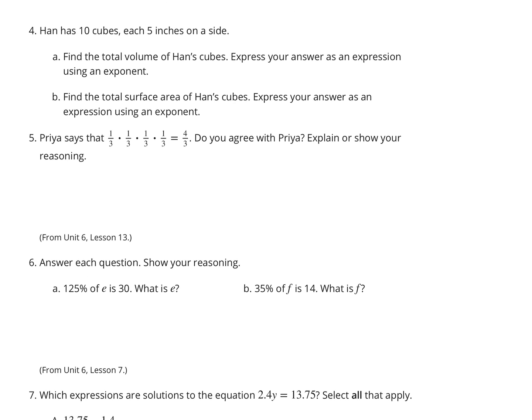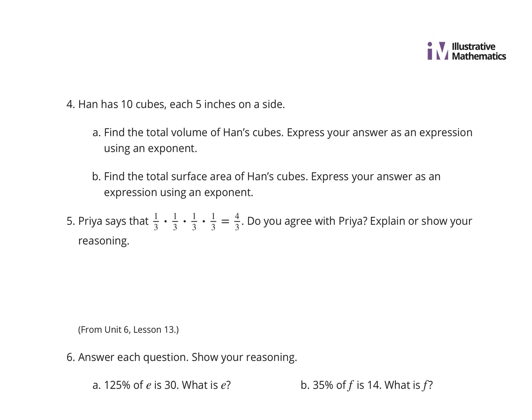Hahn, in question 4, has 10 cubes, each 5 inches on a side. Find the total volume of Hahn's cubes. Express your answer as an expression using an exponent. He has 10 cubes, each 5 inches on a side. Well, volume is equal to the side length to the third power.